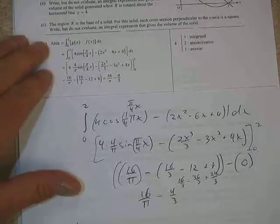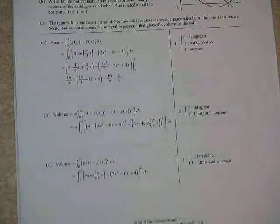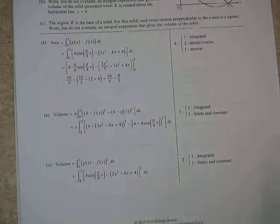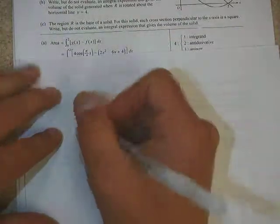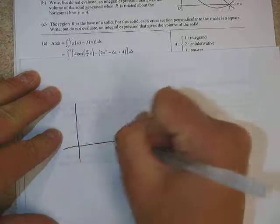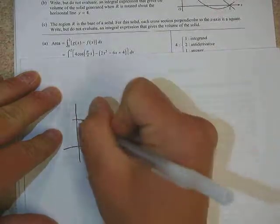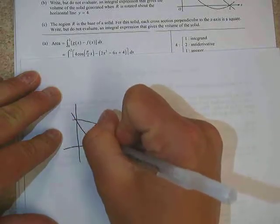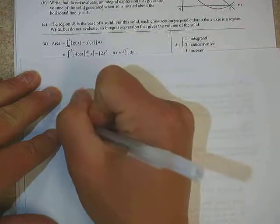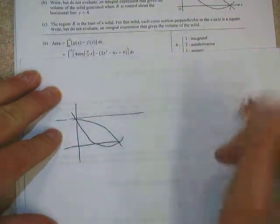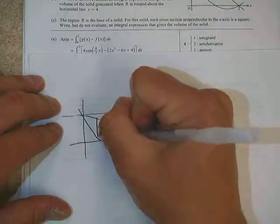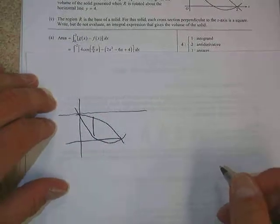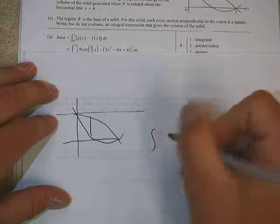And then part B says write, but do not evaluate, an integral expression that gives the volume of the solid when it's rotated over line y equals 4. So in our picture, we have our cosine function, we have our parabola, and we're going to rotate it over the line y equals 4, which is up here, top end of the region. And a vertical slice here would give us washers. So we're going to set up a washer method situation.